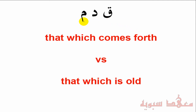From this root we get what supposedly seem like two opposite meanings. We know that in Arabic, words derived from a similar root contain a related meaning. We have the meaning of that which comes forth and that which is old. If that's a timeline, what comes forth is present and future, and old is the past — so they're opposites. Let's explain this.